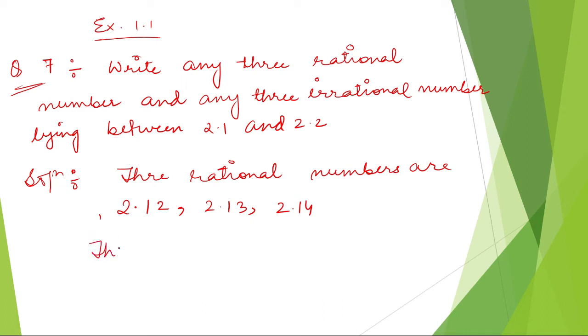Now three irrational numbers. Well, you are going to write three irrational numbers. So irrational numbers must be numbers which don't stop anywhere, meaning they don't have any end.